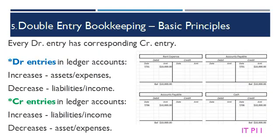The basic principle in double-entry bookkeeping is that every debit entry has a corresponding credit entry. Debit entries in the ledger accounts increase assets and expenses, and decrease liabilities and income. Credit entries in the ledger accounts increase liabilities and income, and decrease assets and expenses.